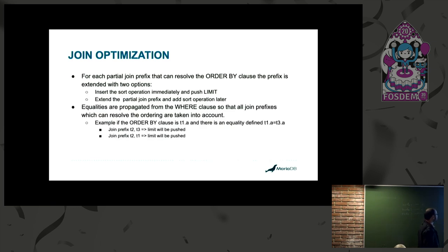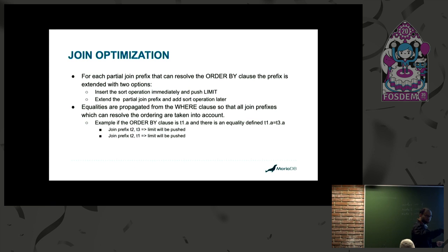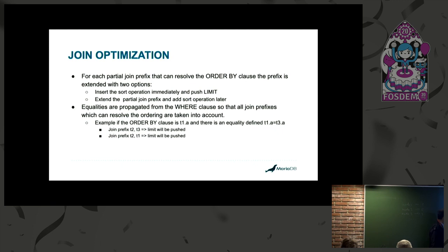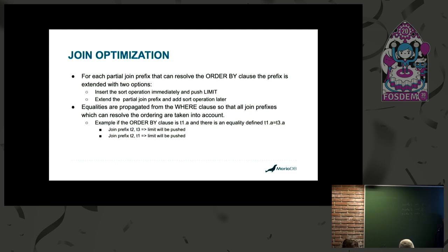For each join prefix, there are two conditions. If that prefix can resolve the ORDER BY clause, you can either push the limit at that instance, or extend the prefix by another table and then push the limit. We do this to consider all possible plans where we can push the limit. Also, equality propagation — which was previously always done after the join planner picked a plan — is now propagated before. So if you have a join prefix like T2, T3 and an ORDER BY on T1.a with an equality, we consider pushing the limit both for the original and the equality-propagated plans.